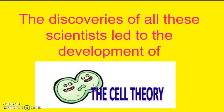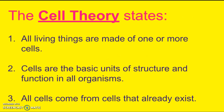The cell theory is basically the broad explanation of the relationship between cells and living things. There are three parts to the cell theory. The first part is: all living things are made of one or more cells — some living things can be unicellular, meaning they're made of one cell, or multicellular, meaning they're made of multiple cells. The second part states that cells are the basic units of structure and function in all organisms. And the third part is that all cells come from cells that already exist.